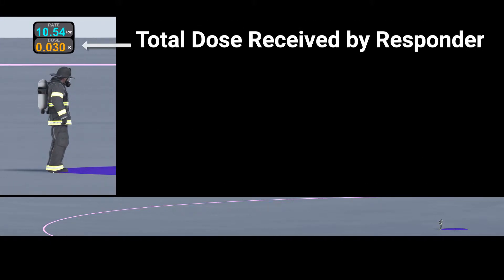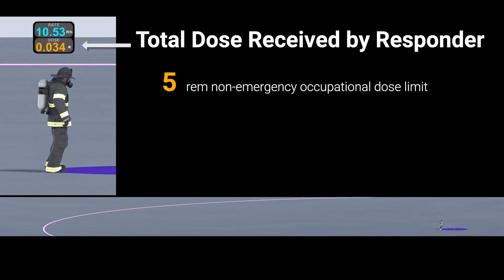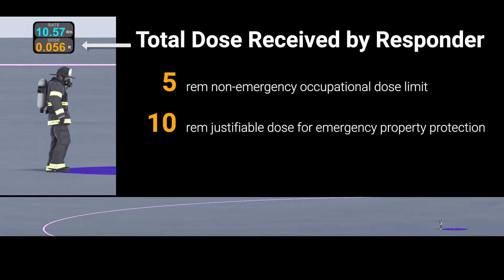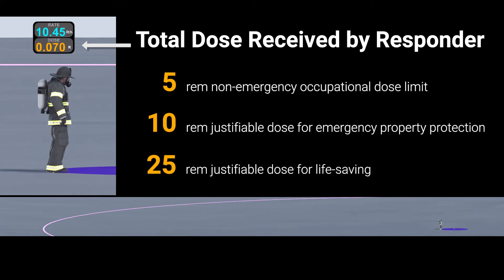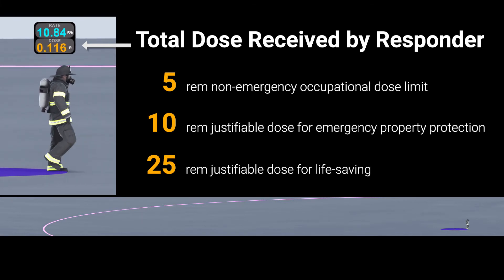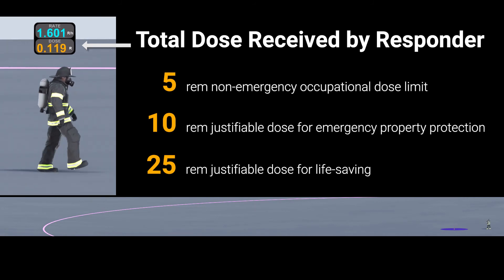The total dose received by the responder is shown by the bottom number. In the United States, occupational workers typically have an annual dose guidance of 5 r per year. There are no dose limits for emergency response activities. Provided that all reasonable dose reduction actions have been taken, a 10 rem dose is justified for property protection, and a 25 rem dose is justified for life-saving activities. Again, these are not limits, and higher doses can be justified for the protection of large populations when the responder is fully aware of the risks involved.